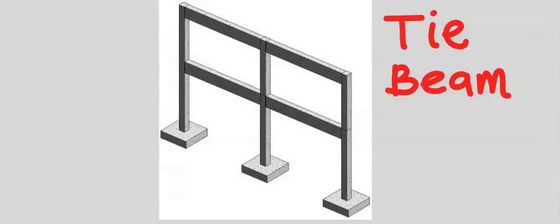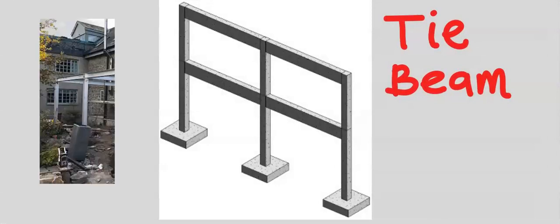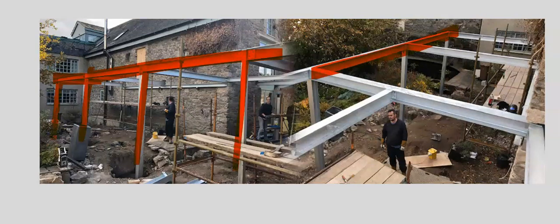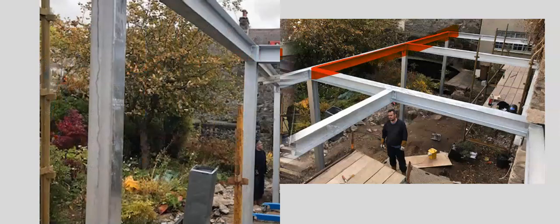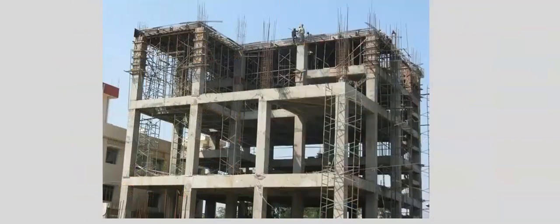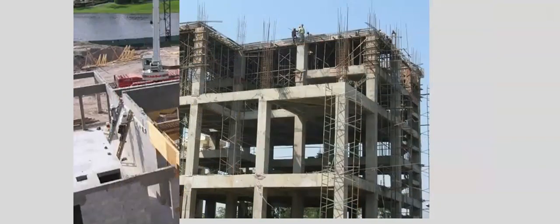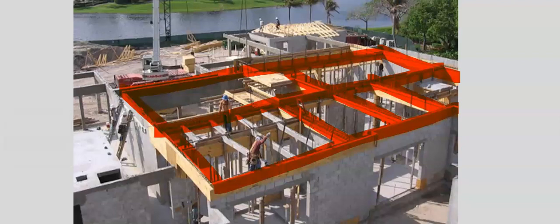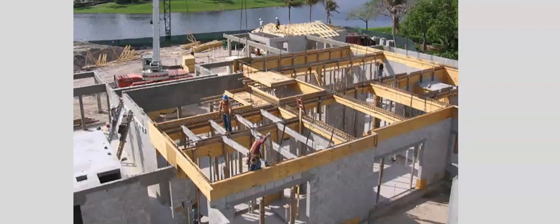A tie beam connects two or more beams and columns together, bringing the whole structural element together to become a structural frame. Any such beam connection constructed on the ground or at a height is simply known as a tie beam. Tie beams ensure structural stability.